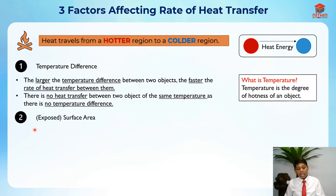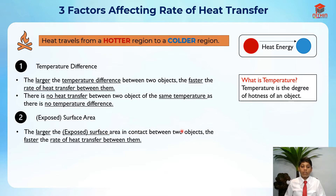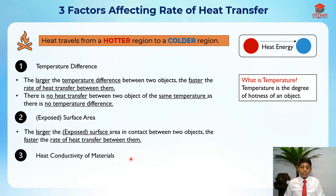The second factor is exposed surface area. The larger the exposed surface area in contact between the two objects, the faster the rate of heat transfer between them. If the exposed surface area in contact between the two objects is larger, the rate of heat transfer is faster.